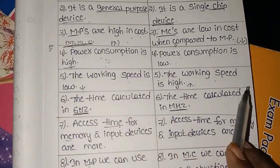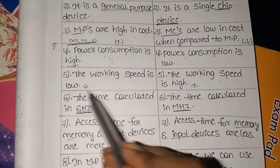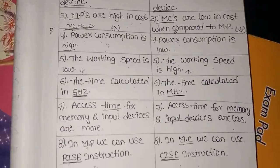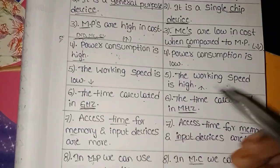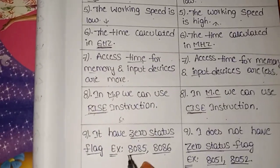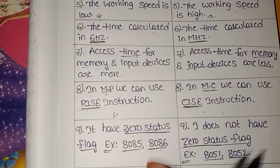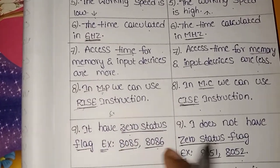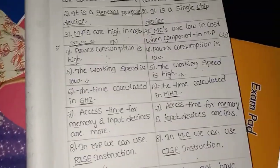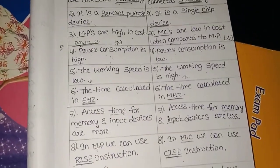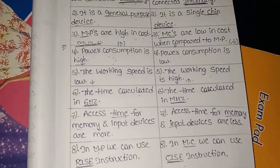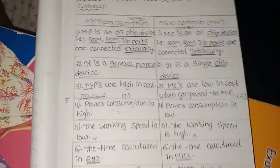So friends, that is the total difference between microprocessor and microcontroller. I have given daily life examples as well. For 10 marks, write more points and examples. For 5 marks, write any 7 points. For 10 marks, write 12 to 13 points. Okay, thank you for watching.